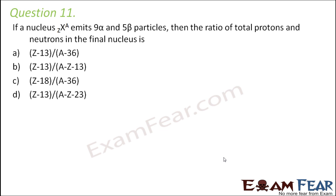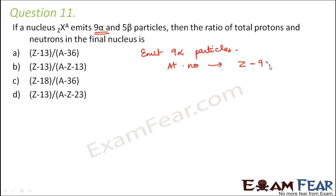Question number 11: If a nucleus X(Z,A) emits 9 alpha and 5 beta particles, find the ratio of total protons to neutrons in the final nucleus. Emitting 9 alpha particles reduces the atomic number by 2 each time, so the atomic number reduces by 18, giving Z−18. The mass number reduces by 4 each time over 9 emissions (9×4=36), giving A−36.